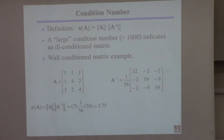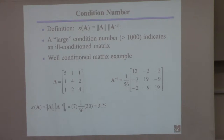There's no universal agreement on what 'large' means for the condition number, but generally if the condition number becomes greater than 1,000, you're getting concerned — your problem's becoming ill-conditioned. Condition number 1,000 itself probably is not too bad, but if it starts getting above 1,000, then you start paying attention.